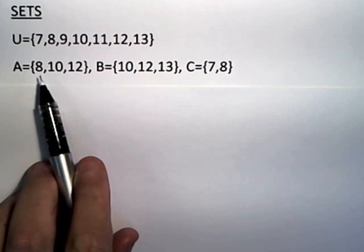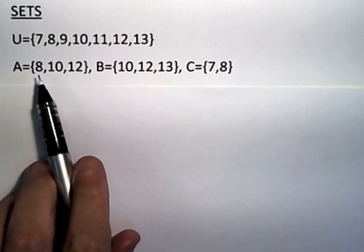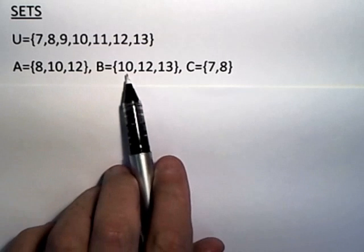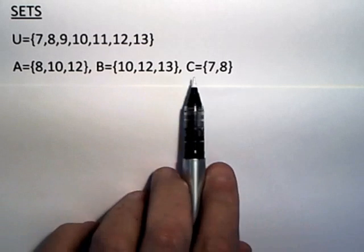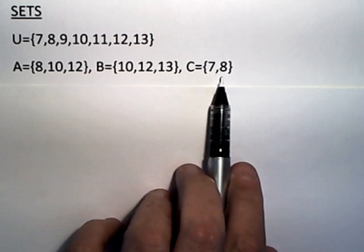Set A consists of the elements 8, 10, and 12. The set B consists of the elements 10, 12, and 13. And the set C consists of the elements 7 and 8.